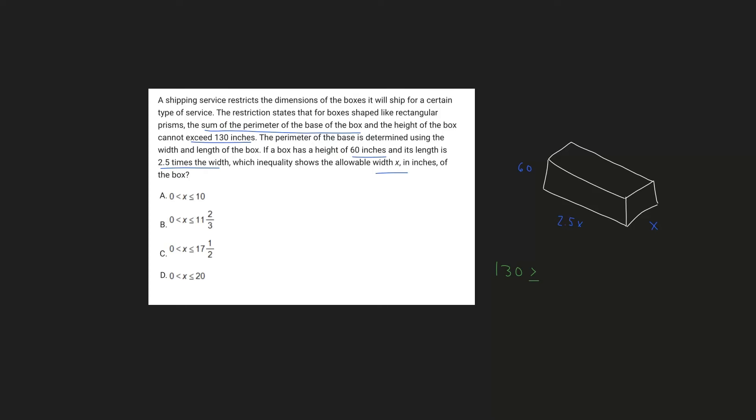And so the height of the box, first off, we have a value of 60. So you have 60, and it's the sum, so we're going to add this to whatever we have with the perimeter of the base of the box. So the perimeter of the base of the box is just that base, that one side. So that one side, we're going to have that length and that width.